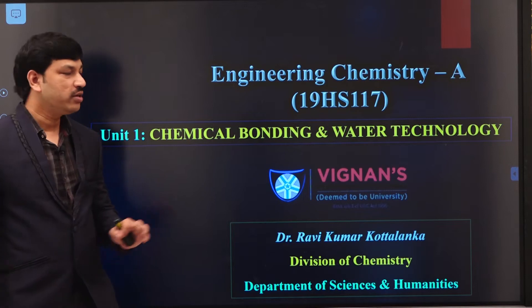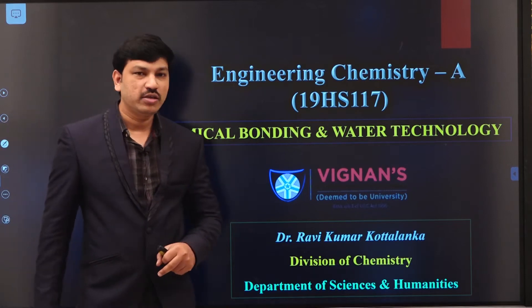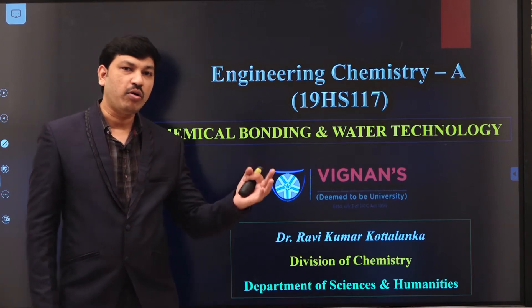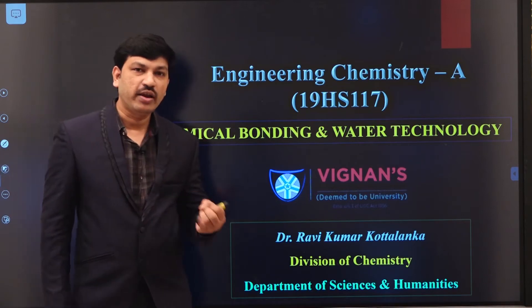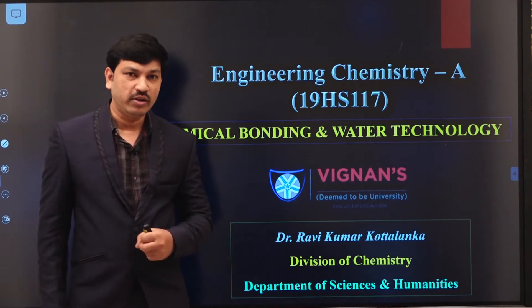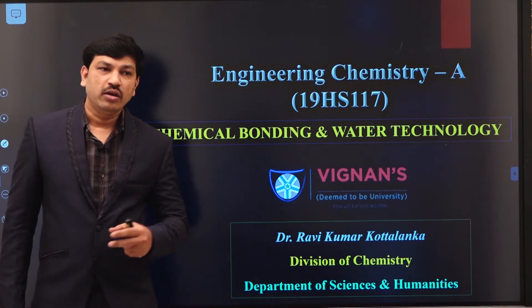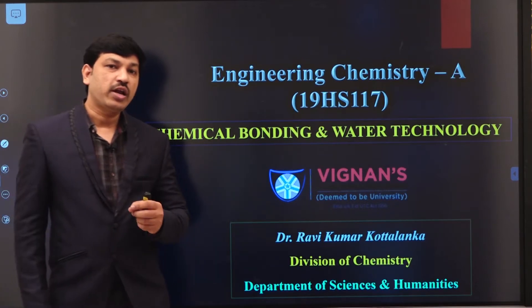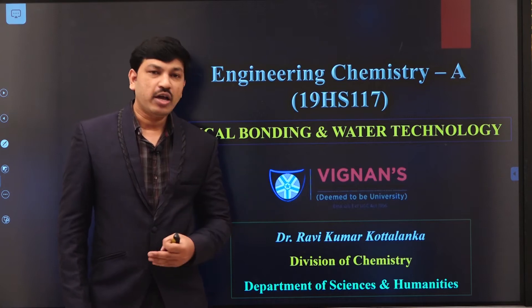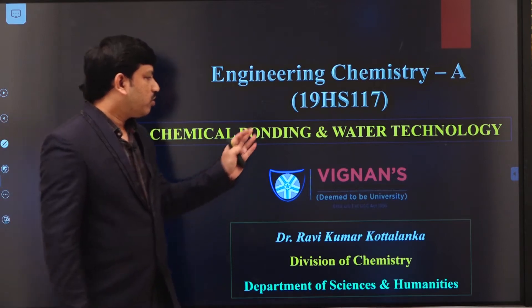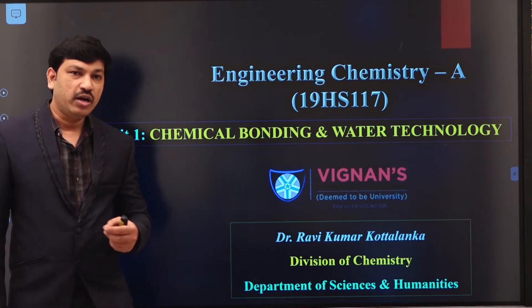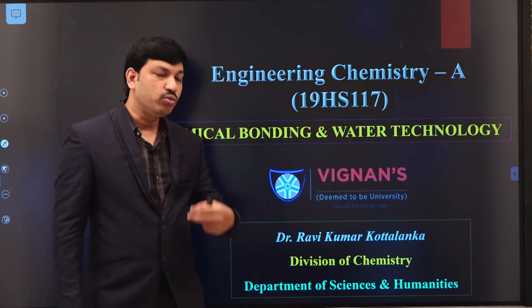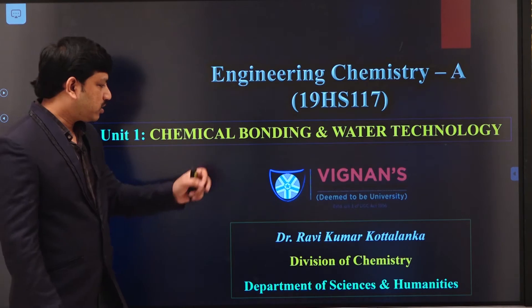Welcome back. In this new session on chemical bonding, in our last session we discussed various theories proposed to explain bonding in metal complexes, like Werner's theory, valence bond theory. We are now discussing crystal field theory. According to crystal field theory, the metal-ligand bond is mainly considered ionic in nature, due to electrostatic attractions between the metal d orbitals and ligand orbitals.